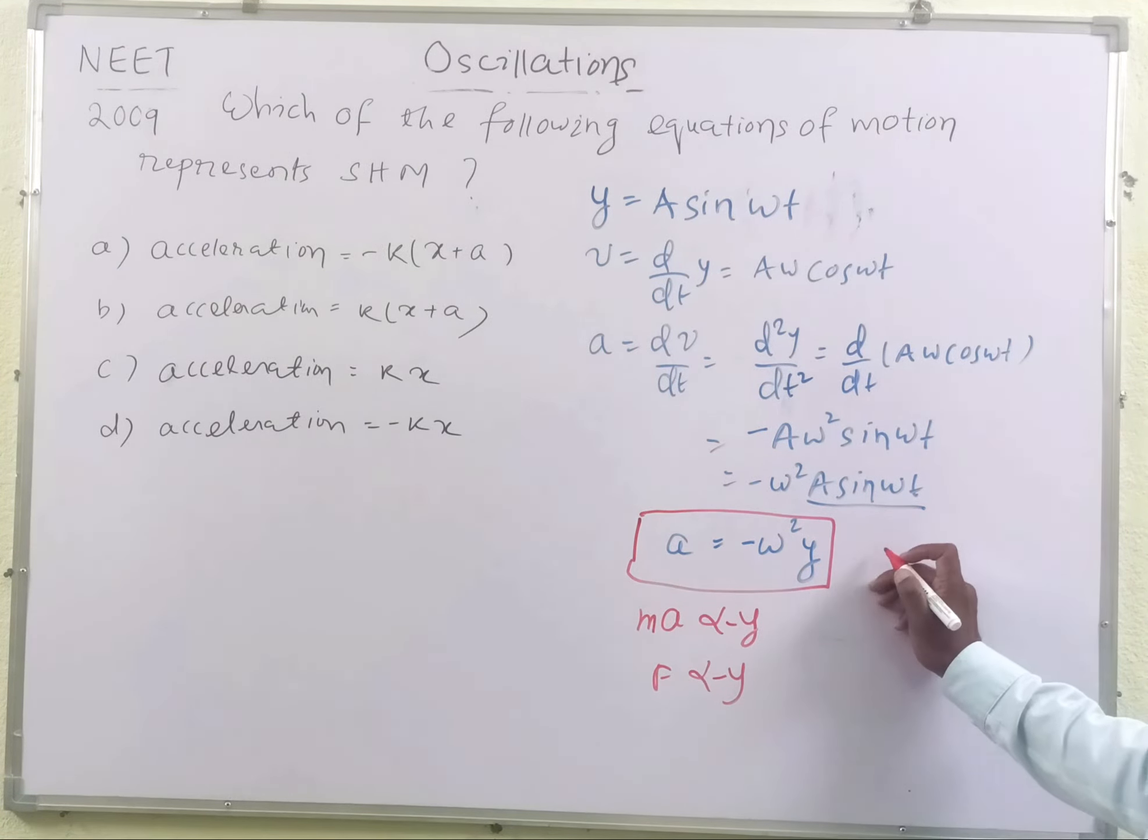In this way, we may write this acceleration in the form of -k, we may write ω² as some constant k times y. If the particle oscillates in the x direction, this can also be equivalently written as a = -kx, which is given here. So option d will be correct for this question.